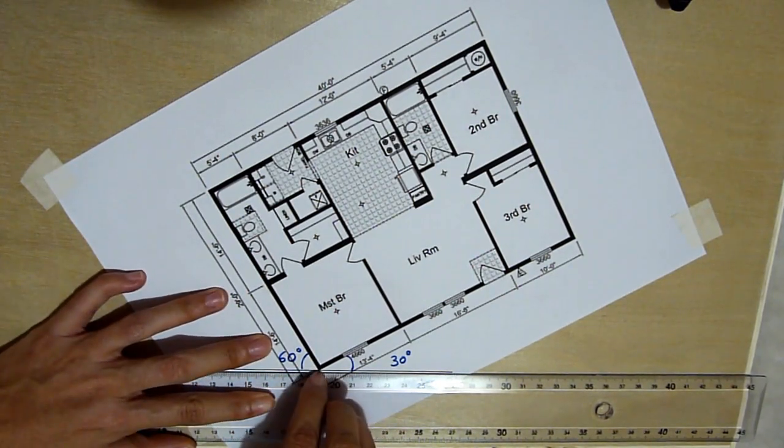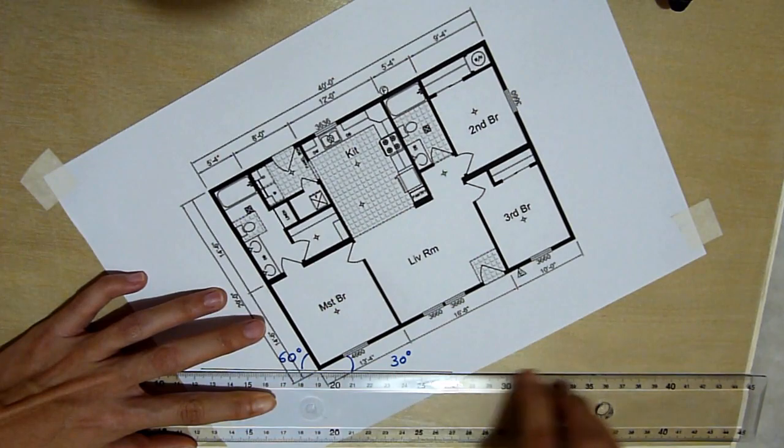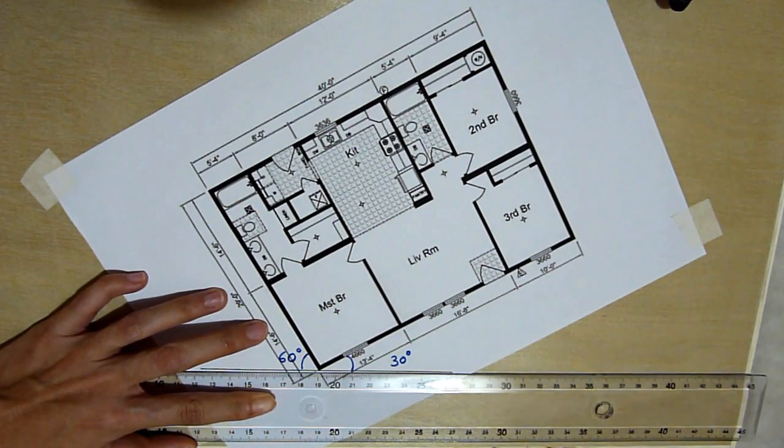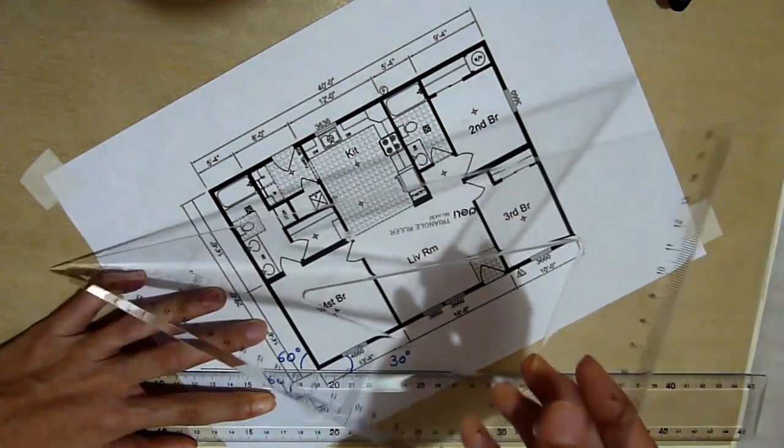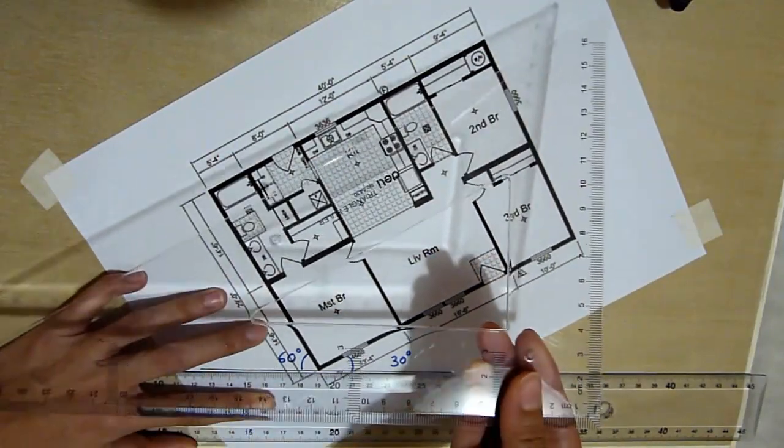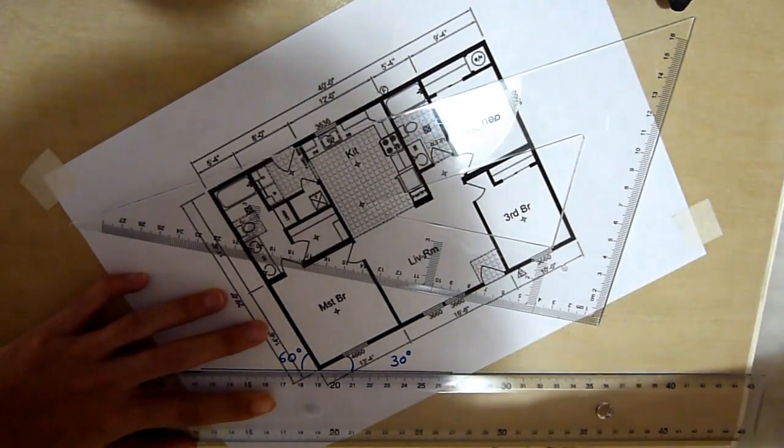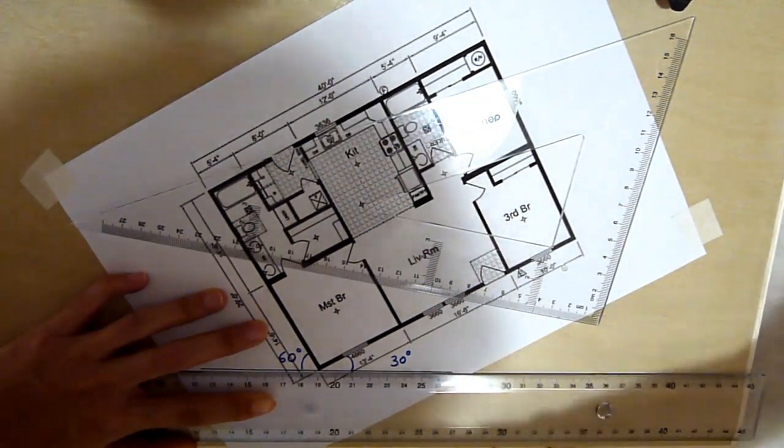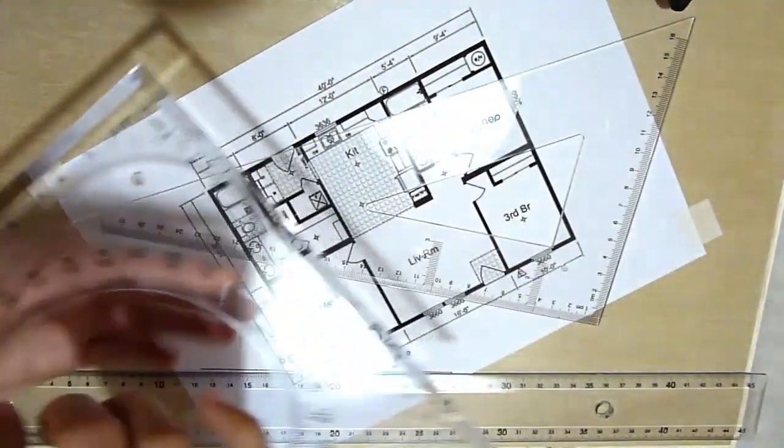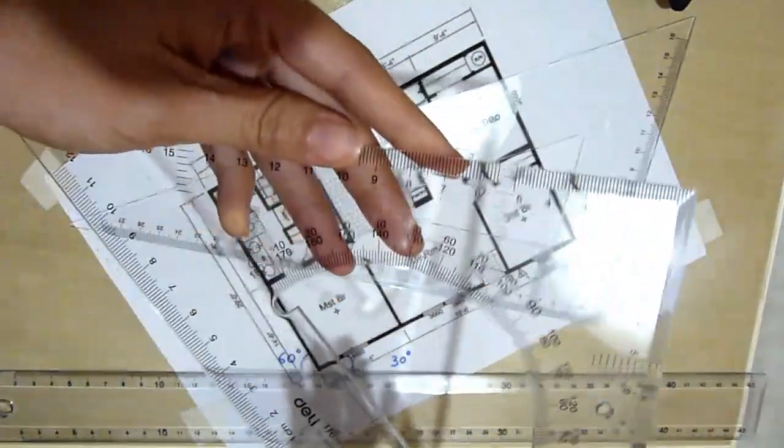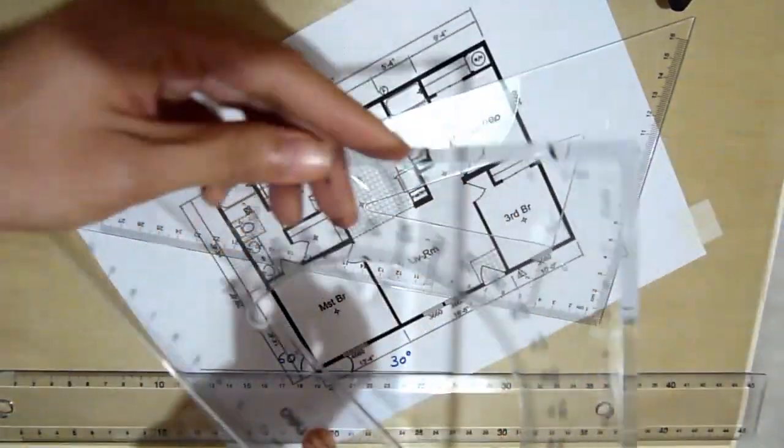So making sure the point here meets this line and then you could use this ruler. This is a 30-60 ruler. It looks like this in contrast to a 45 degree ruler, which looks like this. This is a 45 degree ruler.